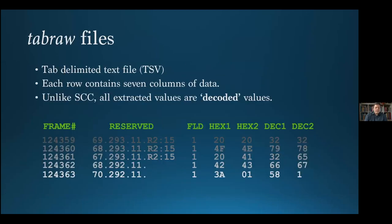The Tab Raw file is a tab-delimited text file. Each row contains seven columns of data, starting with the absolute frame number and the two bytes of extracted data. In this scheme, the extracted data is expressed twice — first as hexadecimal numbers, then as decimal. This is for two reasons: first, to allow for the detection of data corruption; and second, to allow the user to choose whichever set of values best suits their application, platform, and scripting or programming language.